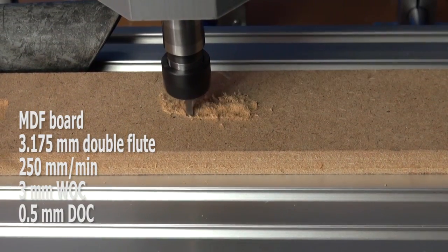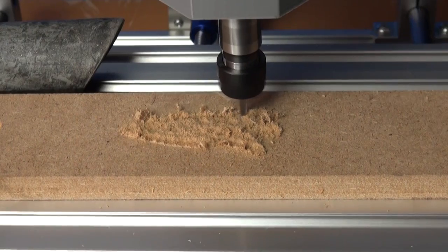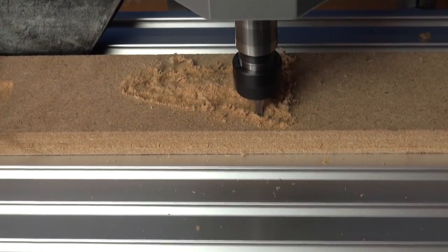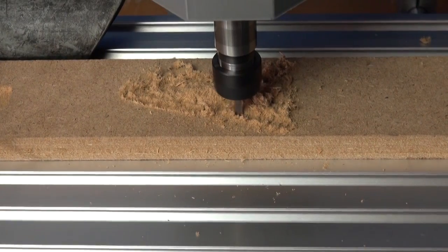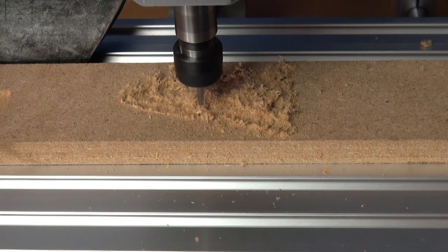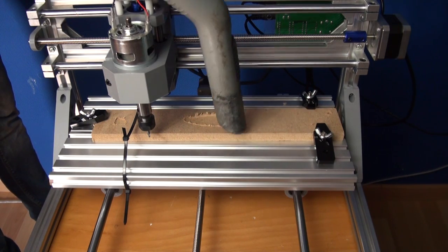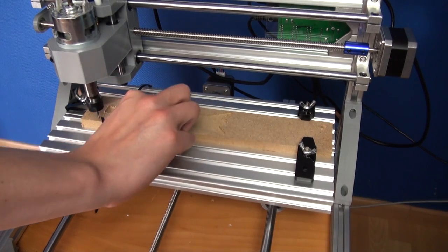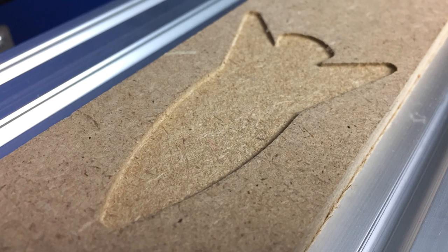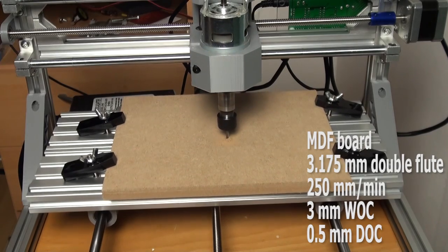After testing several settings I found out that a feed rate of 250mm a minute with a 0.5mm depth and a 3mm wide cut worked really well with this end mill and the MDF board. This rocket shape came out perfect and the surface finish looked good. Also a larger cut in the MDF board went well.